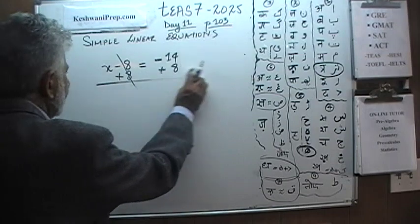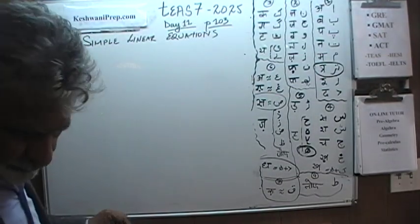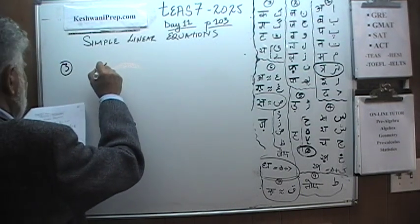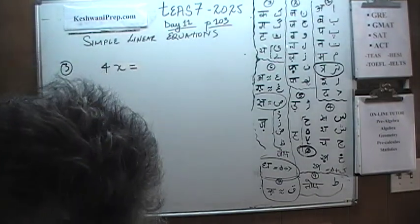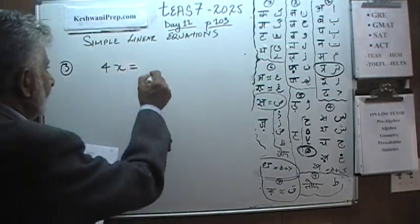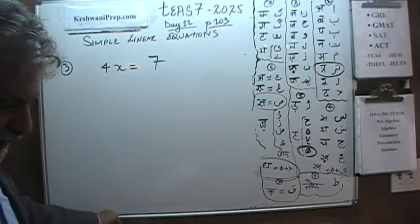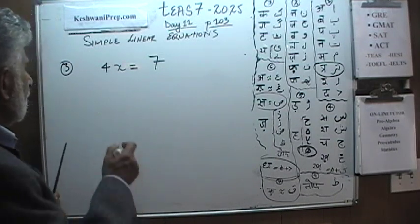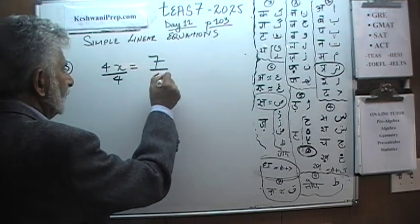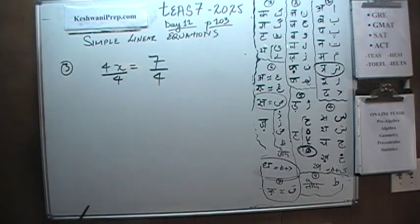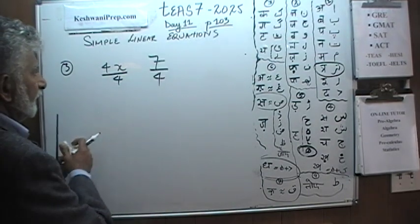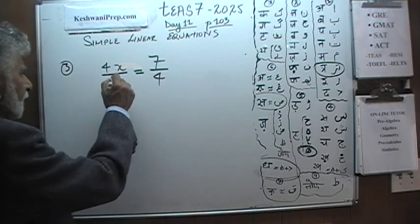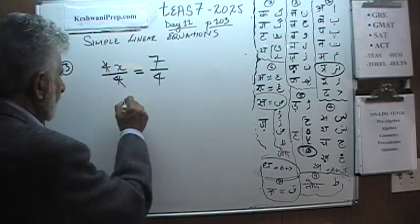This is number 3. We are told that 4x is equal to 7, and we want to find out what x is equal to. So we have to get rid of this 4. We can very easily get rid of this 4 by simply dividing both sides of the equation by 4. I like to bring my equal sign down because it has to line up. If you divide both sides by 4, this 4 drops out, and x is equal to 7 fourths.